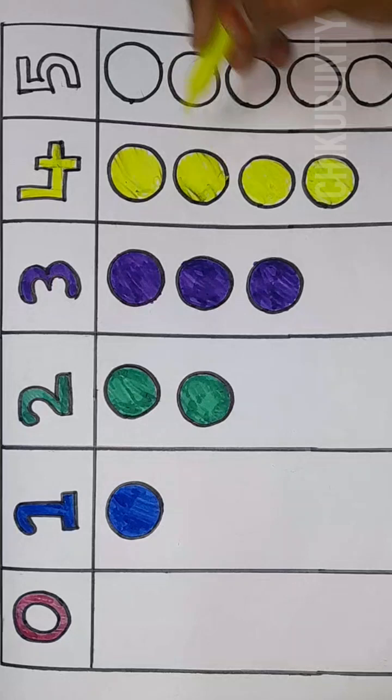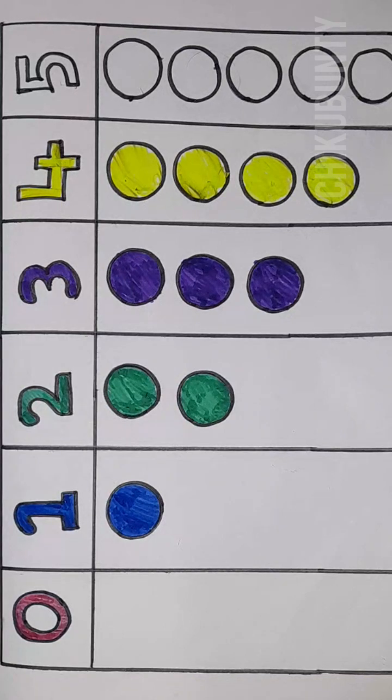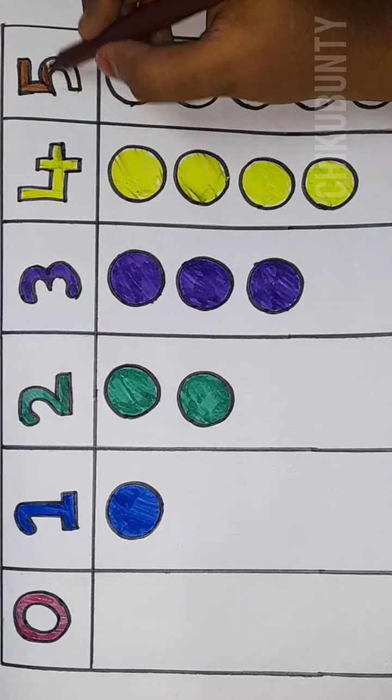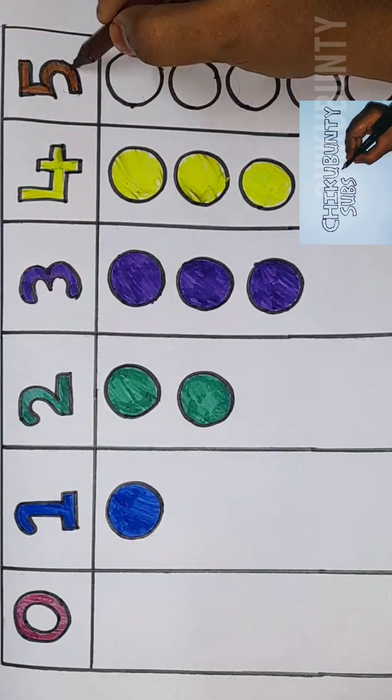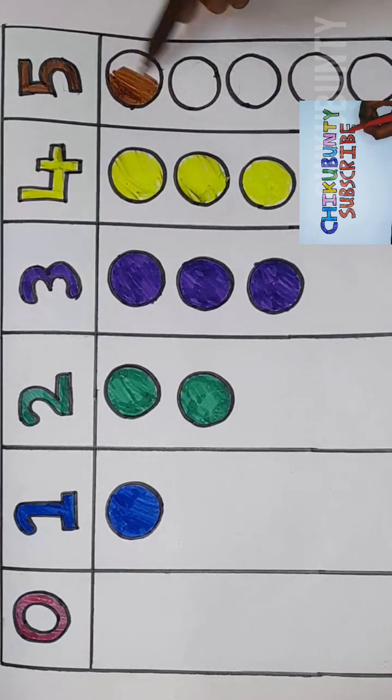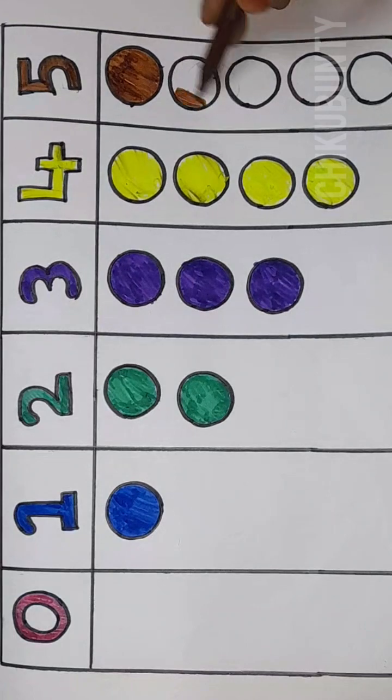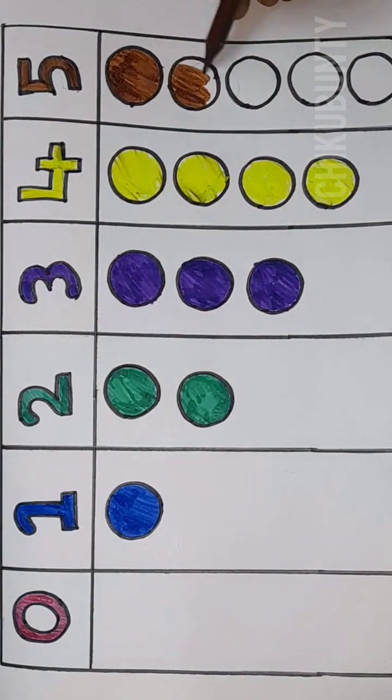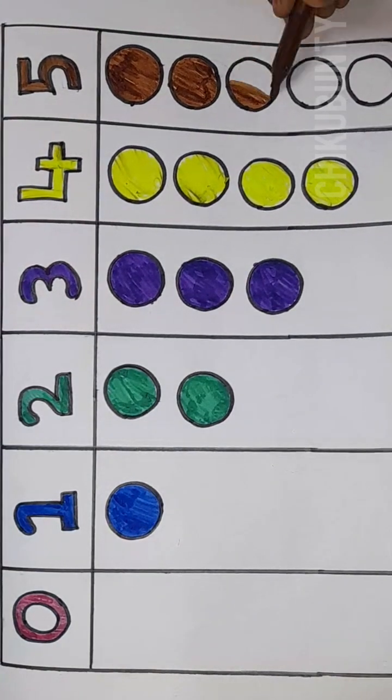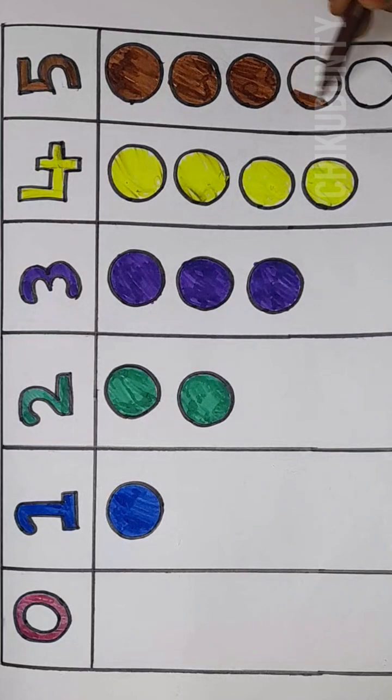Five, brown color. Five, brown color. Five, five circles. One, two, three, four, five.